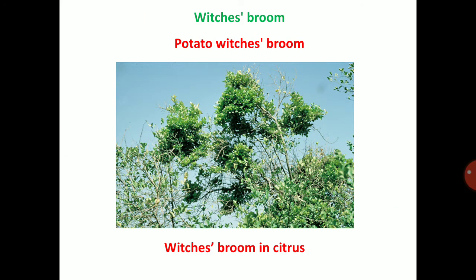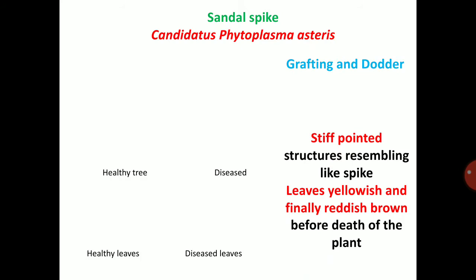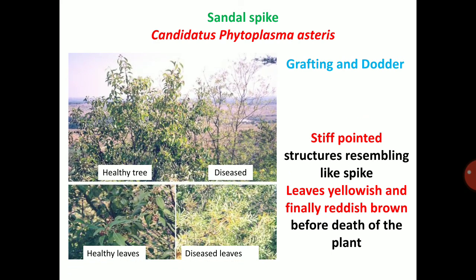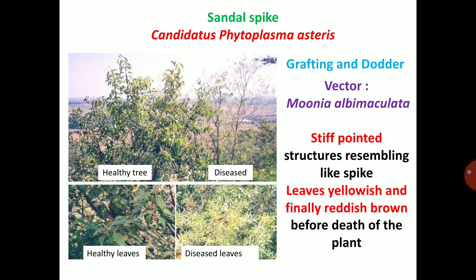Next, witch's broom symptom. Two important diseases: Potato witch's broom and witch's broom in citrus. Due to shortened internodes and small leaves, a witch's broom appearance develops. Next, sandal spike — Candidatus Phytoplasma asteris, mainly spread through grafting and dodder. Stiff pointed structures resembling spikes are produced. Leaves yellow and finally become reddish-brown before death of the plant. The vector is Moonia albimaculata.